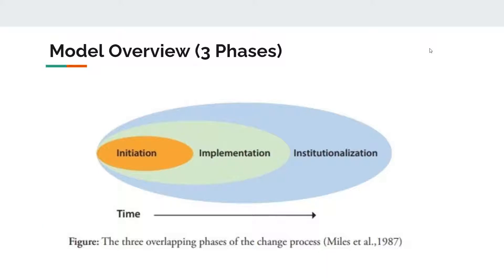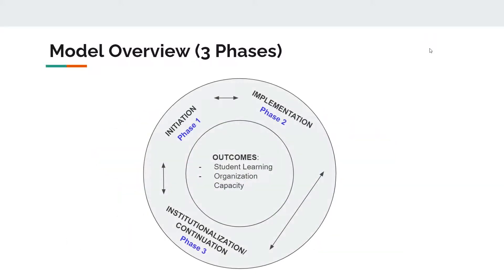However, it is important to recognize that the Fullan model has a narrow focus when it comes to change initiatives in educational environments. This alternative visualization of the model by Fullan demonstrates how at the center of any change initiative should be a constant focus on two outcomes: improving student learning and improving organizational capacity to better support learning. If the desired outcome of your change initiative does not fit under these categories, this is not the model for you.